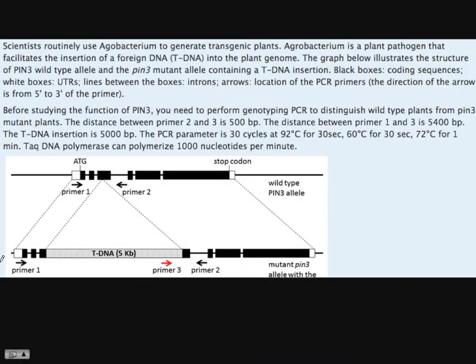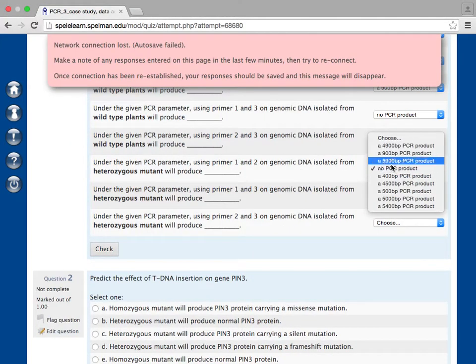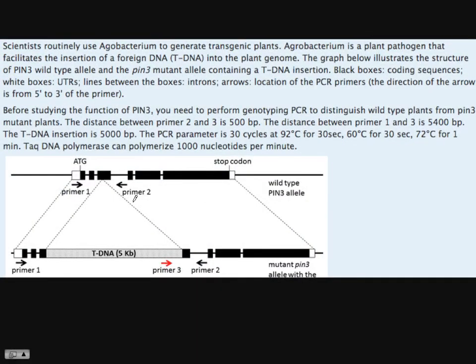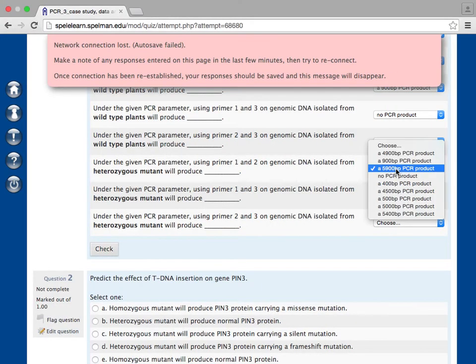Primer 1 and 2 on heterozygous mutant. It should give 2 bands. Can you pick more than 1 choices? It should give 5.9 and 900 base pairs. If it's heterozygous, basically, primer 1 and 2 going to amplify this region and this region. At the bottom is 5.9, at the top is 0.9. It should give 2 bands. But this one doesn't give you a choice to pick more than 1.